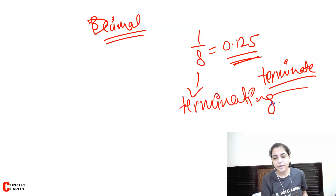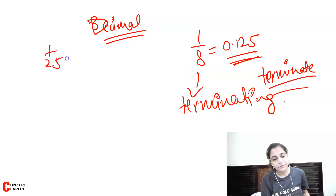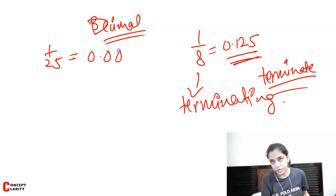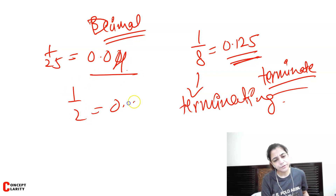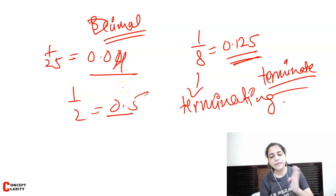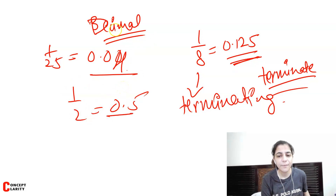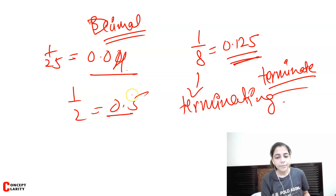Similarly, take 1 by 25, which equals 0.04 — it terminates. And 1 by 2 is 0.5 — it also terminates, nothing comes after that. These are all terminating numbers.